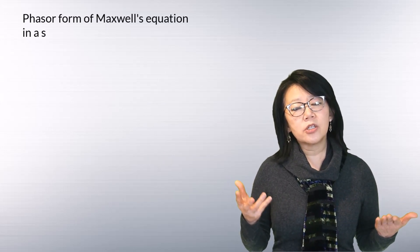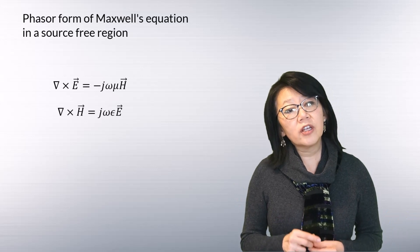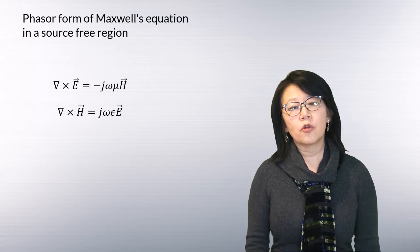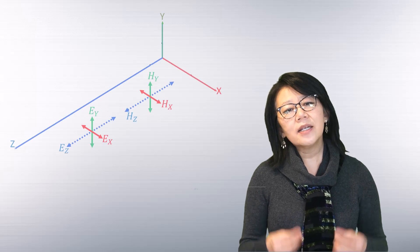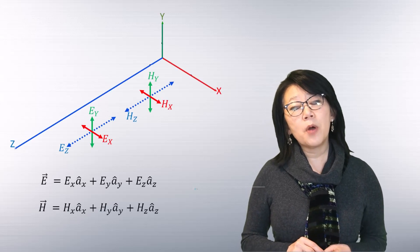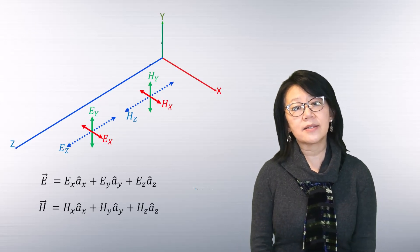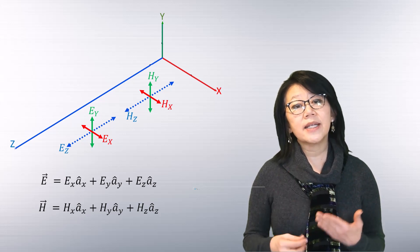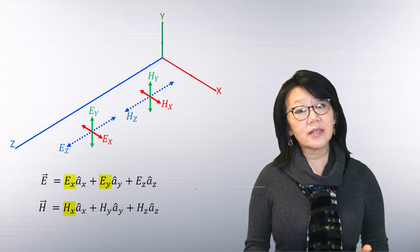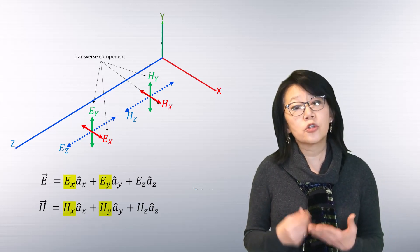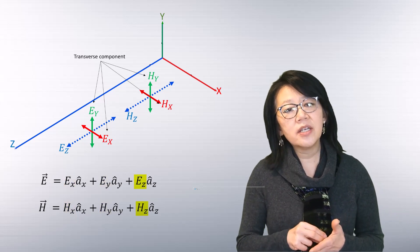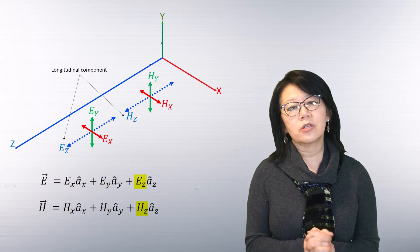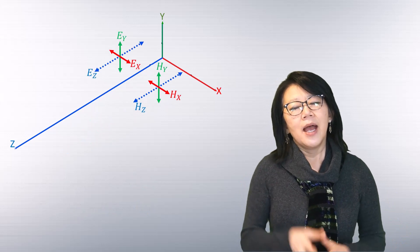Let's start by recalling Maxwell's equations for a source-free region in phasor format as shown. The electric and magnetic fields have components along the x, y, and z axes — designated as Ex, Ey, Hx, and Hy are the transverse components, and Ez and Hz are the longitudinal components to the wave propagation.